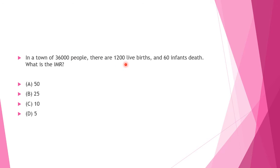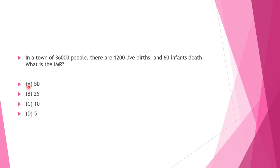Next question: In a town of 36,000 people there are 1,200 live births and 60 infant deaths. Option A: 50, Option B: 25, Option C: 10, Option D: 5. Answer to this question is Option A: 50.